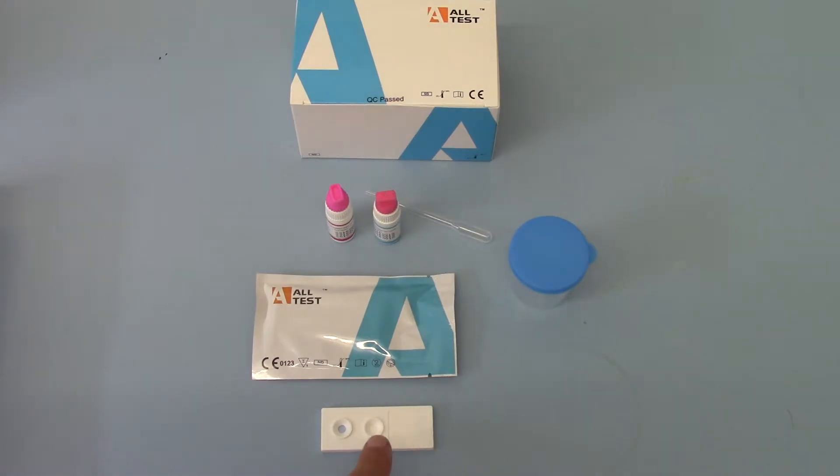Now what you're looking for is the color that forms in your sample well A. For a normal or positive result indicating that there are over 15 million per mil sperm in the sample, the blue dye that forms in sample well A should be darker than the blue dye showing in sample well B.